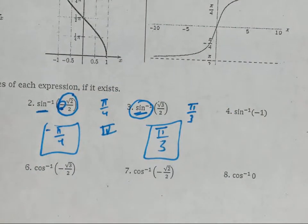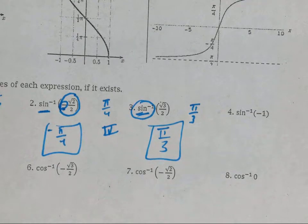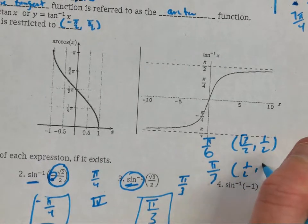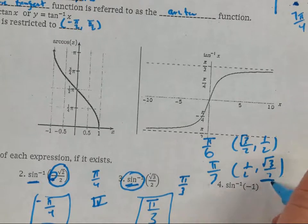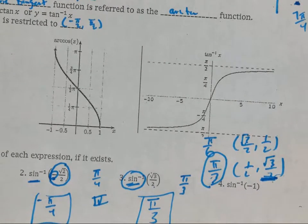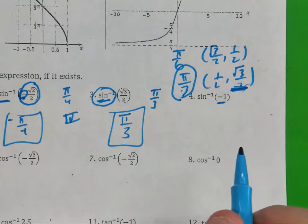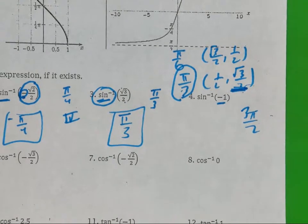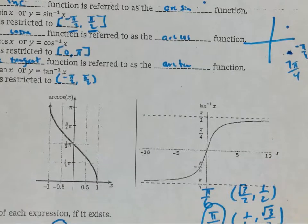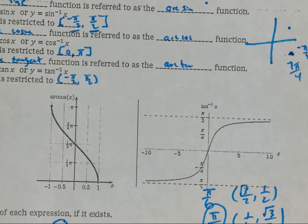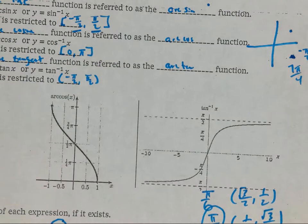Sine is your y-coordinate. Think back to the unit circle — which reference angle has a y-value of square root of three? That belongs to the pi-over-three family. Then for arc sine of negative one — negative one is one of your major points. Where is negative one for sine? Three pi over two. But arc sine has to fall between negative pi over two and pi over two, and three pi over two is one and one-half. So rewrite it as negative pi over two — and because it's in brackets, negative pi over two is allowed.